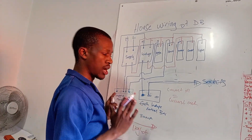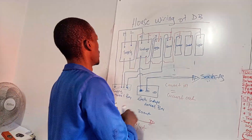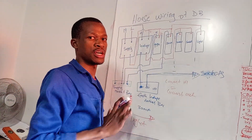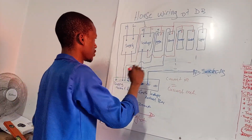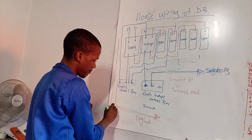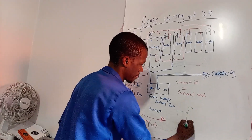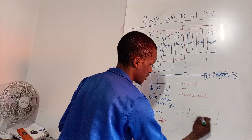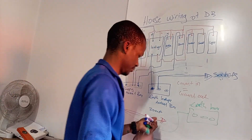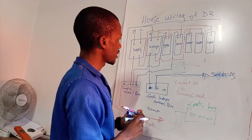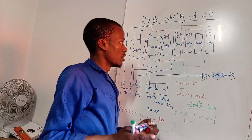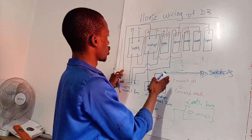That's how you do house wiring. Your earth, wherever you get it — it depends on how it's supplied to you — but wherever you get it, you must also have an earth bar.